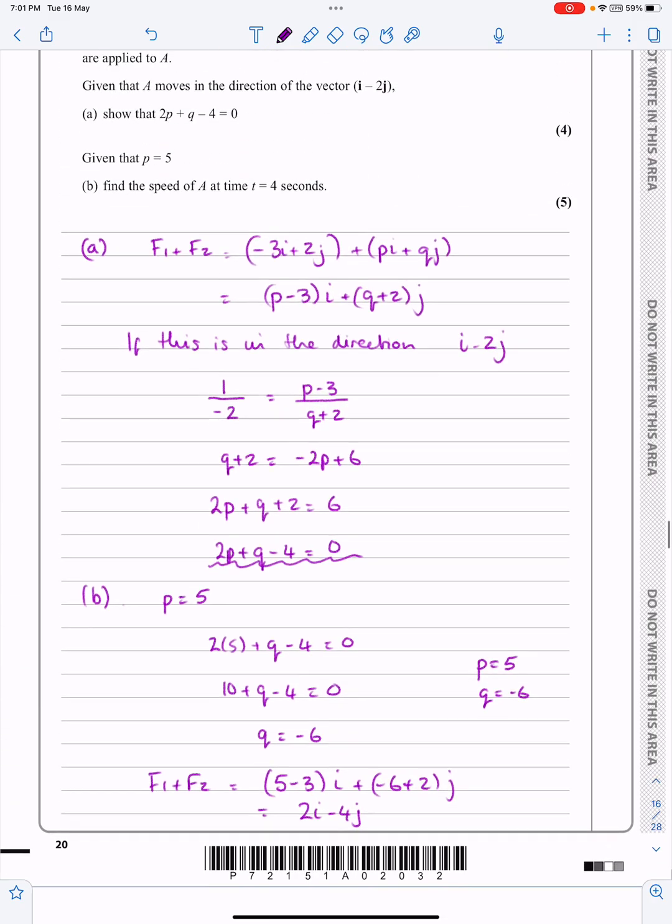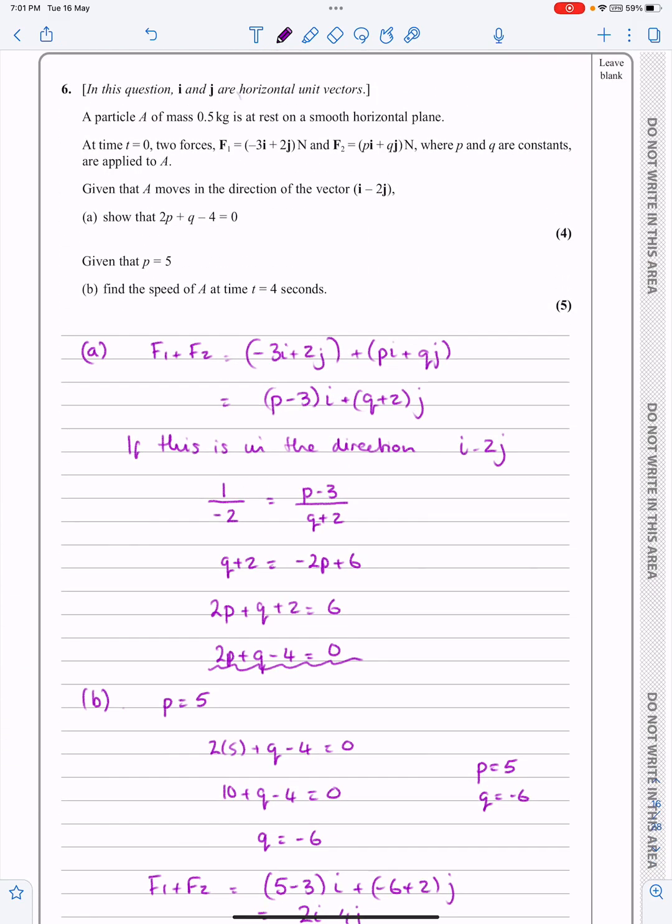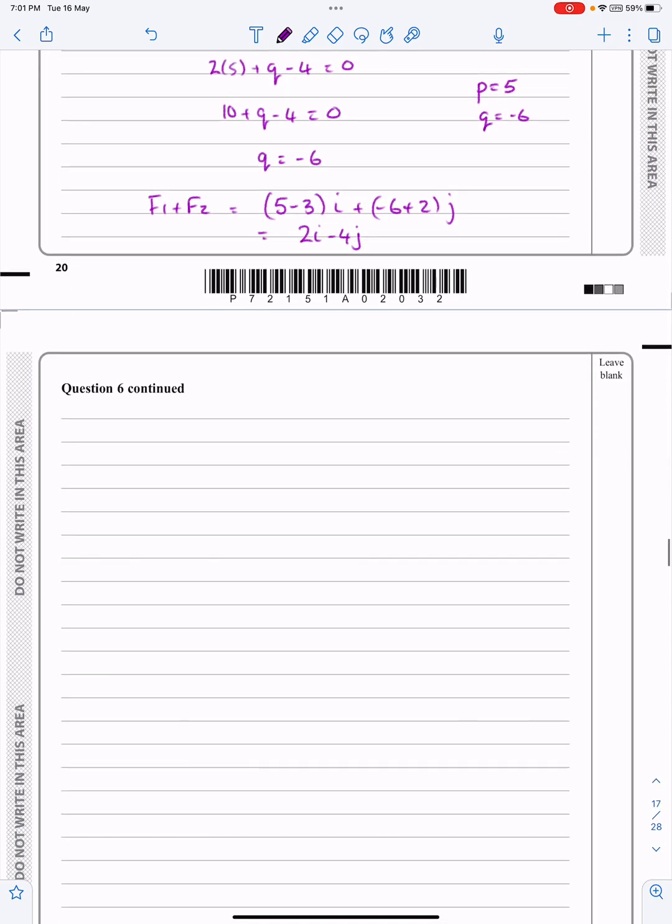And as we said right at the start, when they were telling me up here, they told me a mass. F and a mass means quite often I can work out acceleration, can't I? So tell them what we're doing. Using F equals MA, I've got the 2I minus 4J is equal to the mass, which is 0.5, times acceleration.